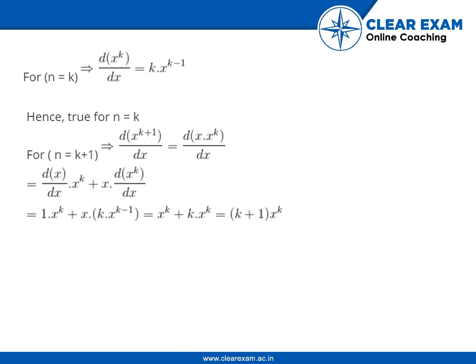For n is equal to k plus 1, d of x to the power k plus 1 upon dx is equal to d of x into x to the power k upon dx, which is equal to dx upon dx into x to the power k plus x into d of x to the power k upon dx, which is equal to x to the power k — since dx by dx is 1 — plus x into k into x to the power k minus 1, which is equal to x to the power k plus k into x to the power k, which is equal to k plus 1 into x to the power k. Hence n is equal to k plus 1 is true whenever n is equal to k is true.